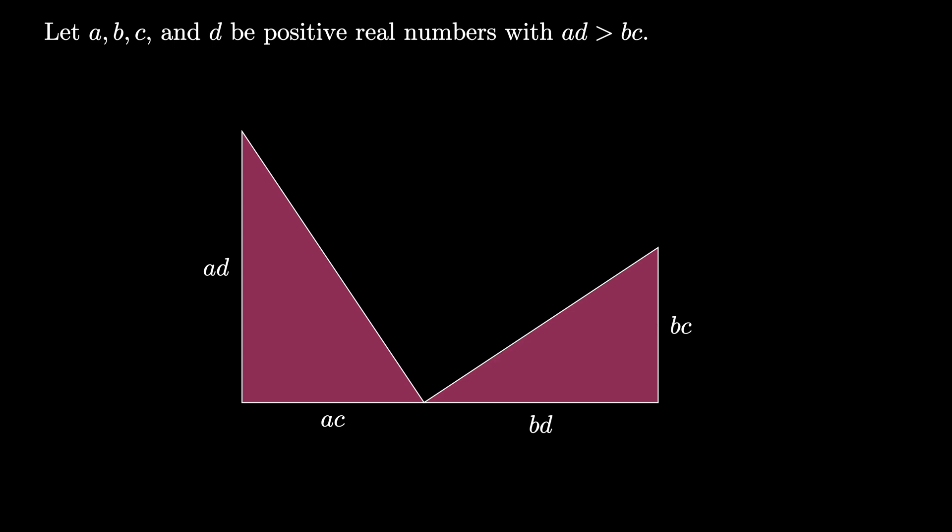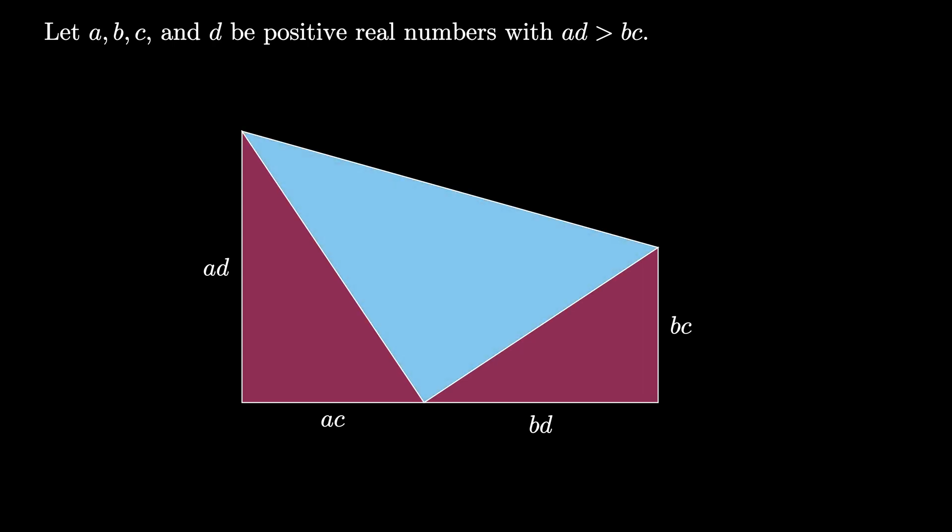Place the two triangles so they meet at complementary angles. Connect the apexes of these two triangles with a straight line to create a third triangle as shown here. We can use the Pythagorean theorem on the original two triangles to find two of the side lengths of this new triangle.